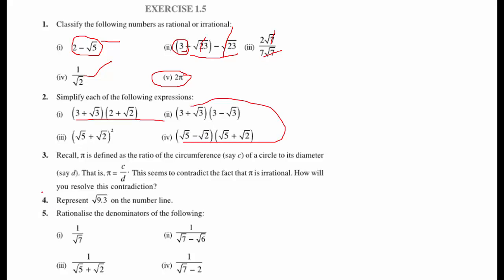Now, represent square root of 9.3 on the number line. Using the same method: first, draw AB equal to 9.3 and BC equal to 1 unit. Then take the perpendicular bisector and draw a semicircle. Then draw perpendicular BD on AC. You will find the root x unit, then draw an arc to mark it on the number line.